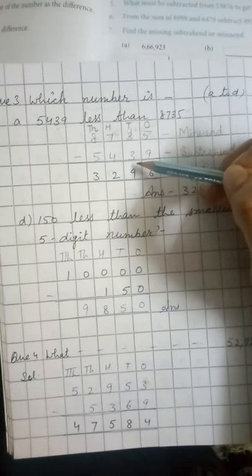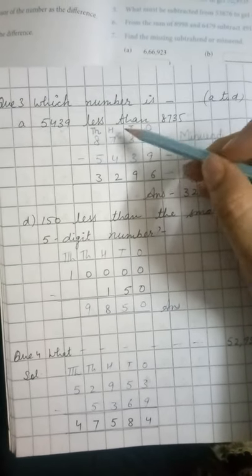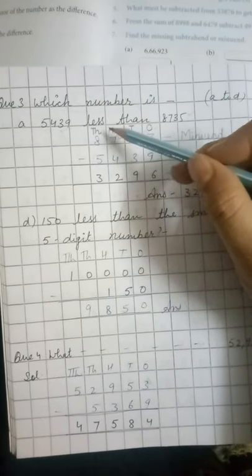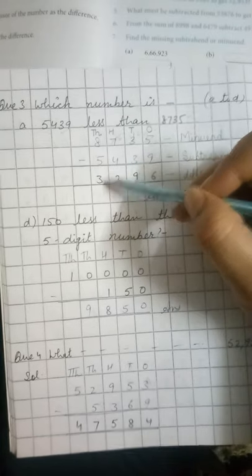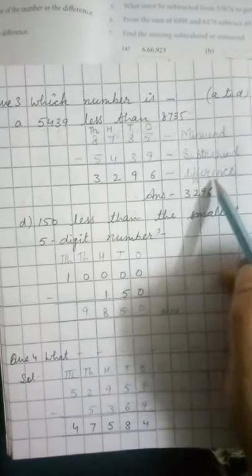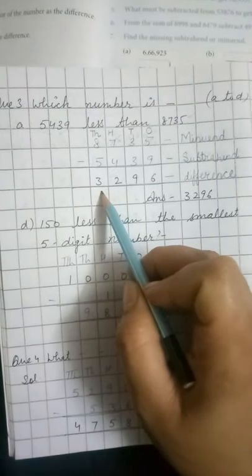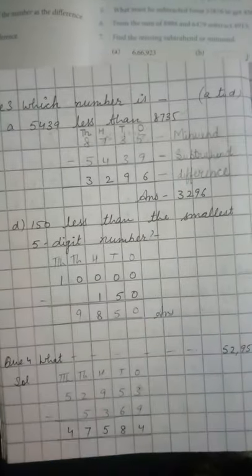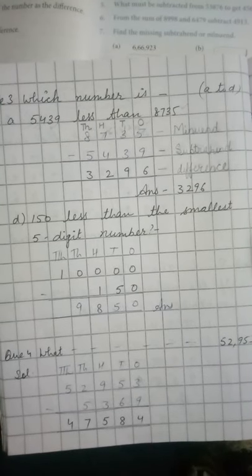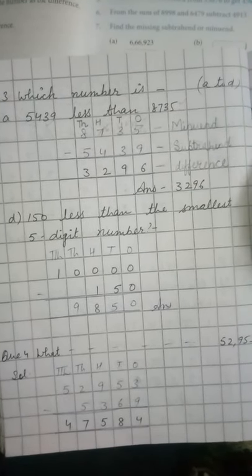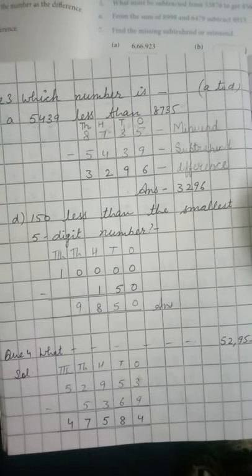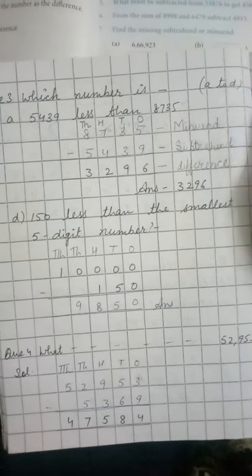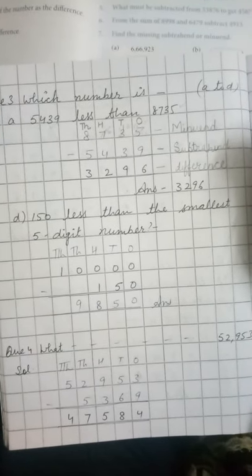12 minus 3 is 9. Then 6 minus 4 is 2 and 8 minus 5 is 3. So the difference is 3,296. So the number 3,296 is 5,439 less than 8,735.